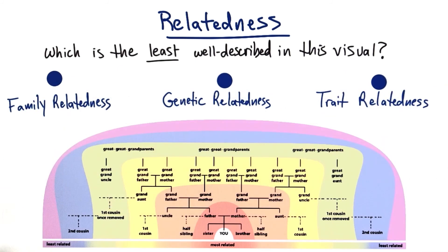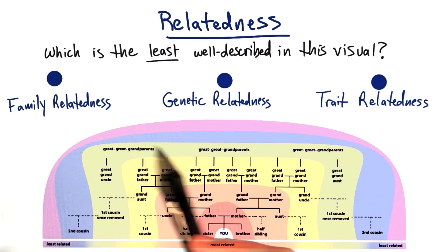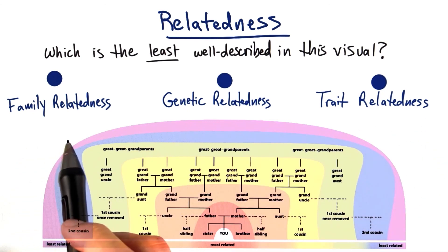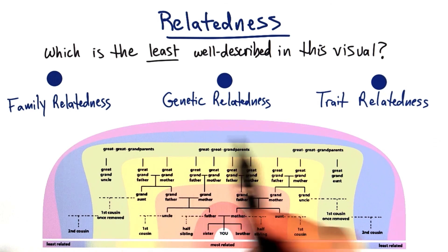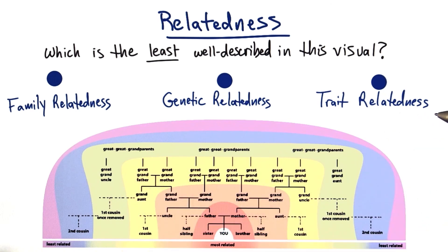Now, with a visual like this, which of the following inferences is the least well described? Would it be family relatedness, genetic relatedness, or trait relatedness? Go ahead and pick the answer you think best applies.